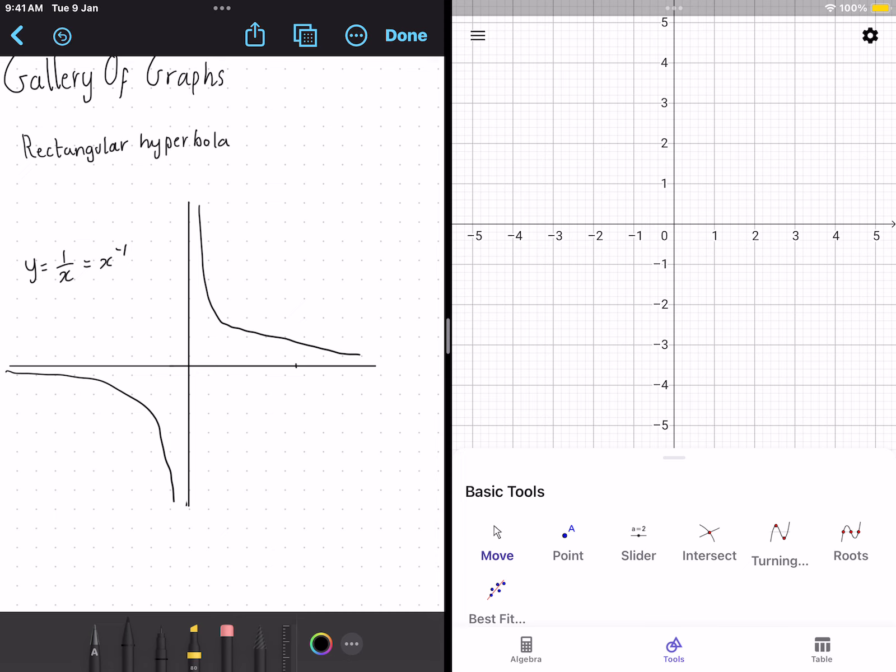So when x is greater than 0, the shape will be like that. And when x is less than 0, the shape will be like this.